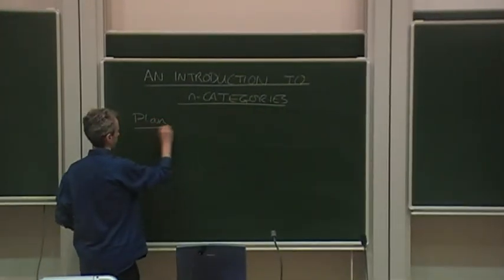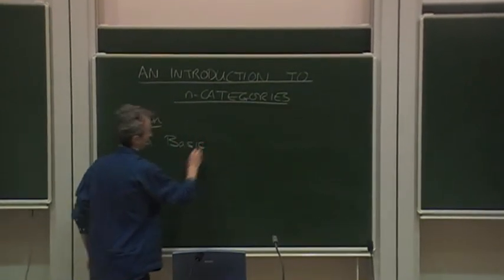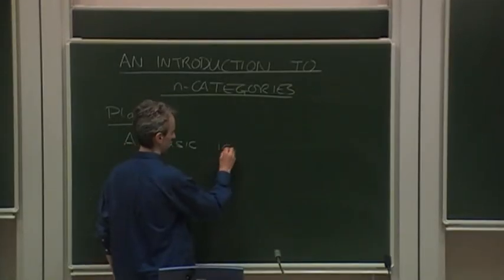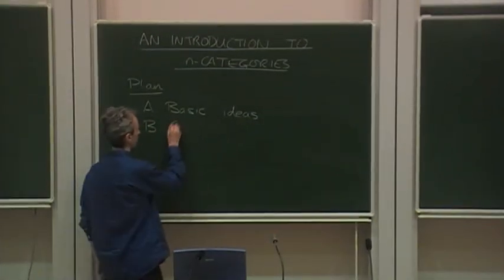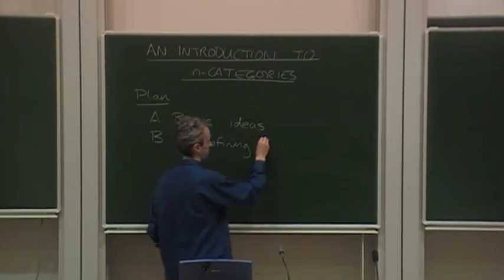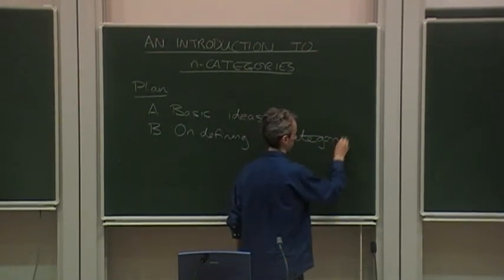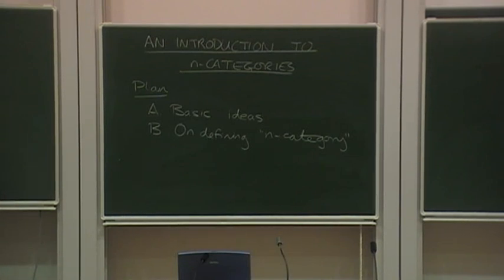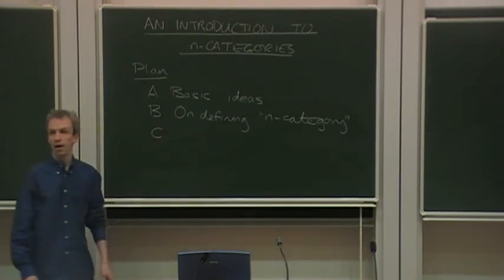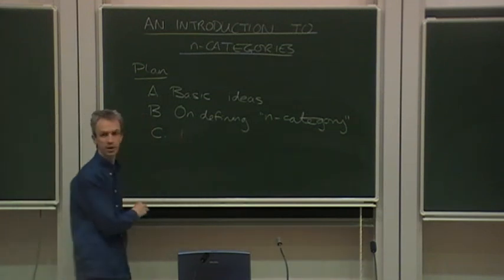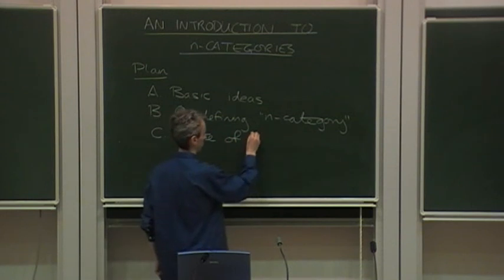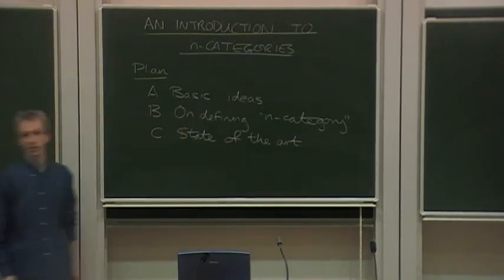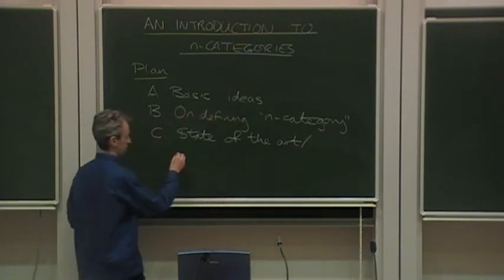Here's the plan. The first part will occupy probably most of the talk, and that will be just basic ideas of n-categories. The second part will be a discussion of the difficult problem of simply defining the term n-category. And the last section, if I get to it, will be some kind of summary of the current situation, rather pompously I'll call it state-of-the-art, but a more accurate description might be difficulties.